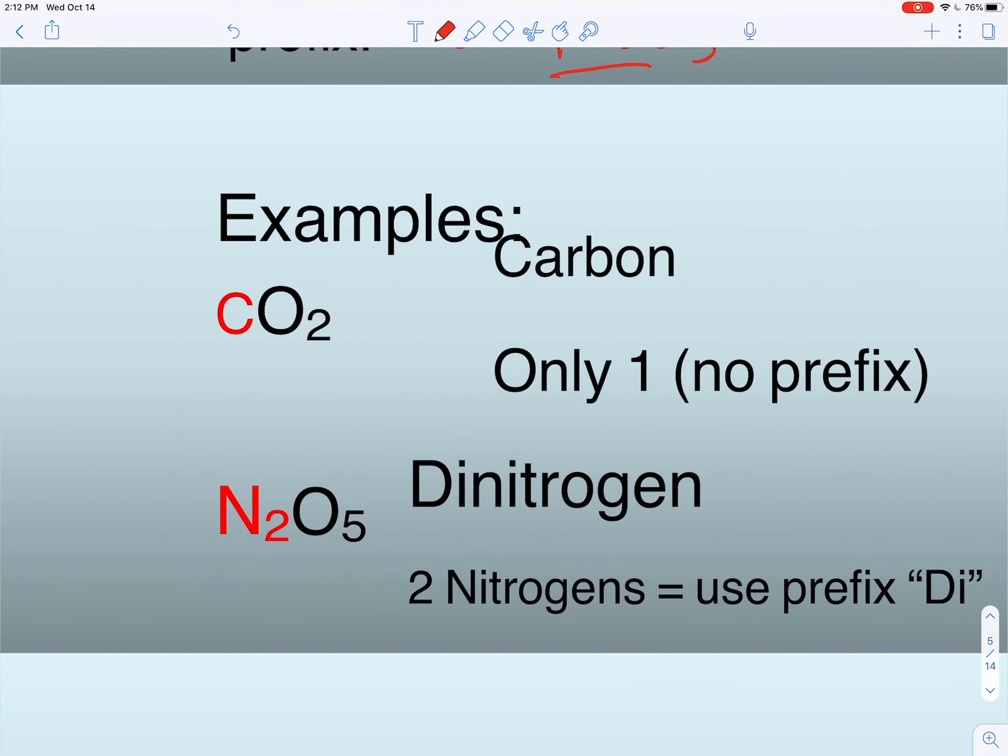Let's take a look at those examples again. CO2 is a chemical many of you know. Because there's only one carbon, we don't use a prefix. In other words, we never say mono to start with any of our covalent compounds.